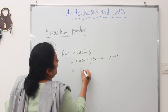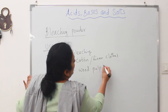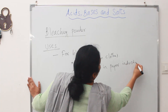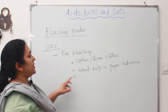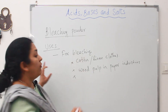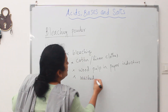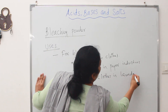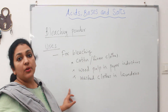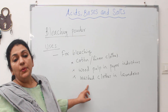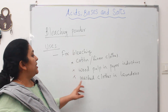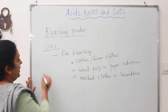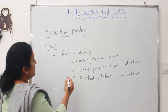The second use is to bleach wood pulp in the paper making industry. It is also used in laundries for bleaching washed clothes. If you want to bleach your cloth after washing, they will use bleaching powder.